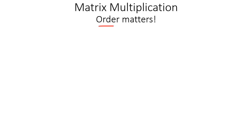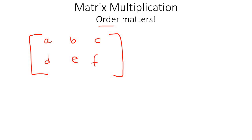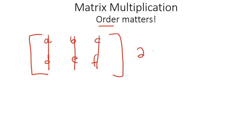In this lesson we're going to look at matrix multiplication. The most important thing you need to understand is the order. A few lessons ago I explained the order of a matrix. For example, a matrix with elements A, B, C, D, E, and F has two rows and three columns, so we call this a two by three matrix.